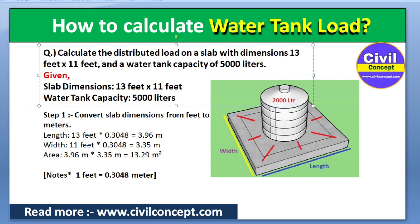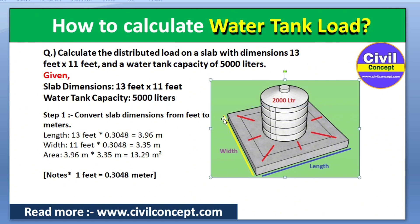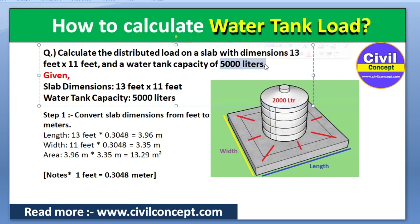The water tank capacity is 5000 liters — this may change according to your requirement, like 1000, 2000, or 3000 liters. The slab dimension is 13 feet by 11 feet. As you can see in this picture, this is the width and this is the length of the slab on which we place 5000 liters of water.